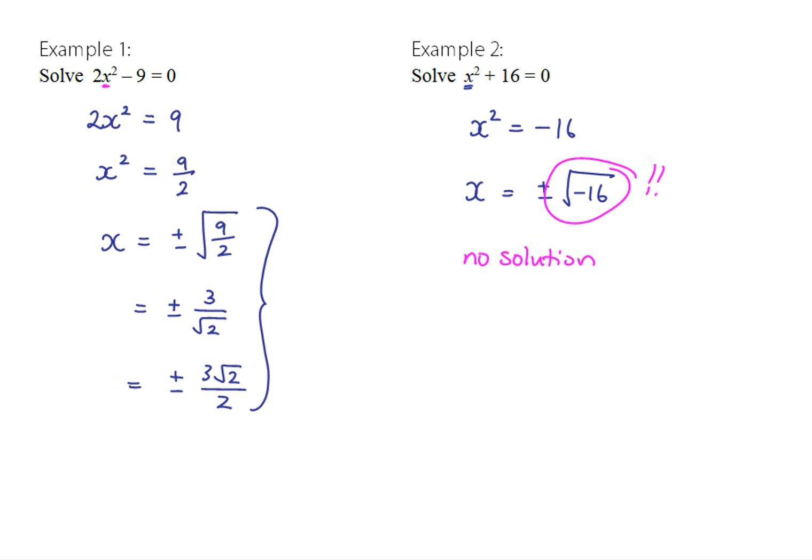So there is no solution to this equation. It's not that you would need to use the quadratic formula — there is genuinely no solution. If you think graphically, the graph of y = x² + 16 is the parabola shifted up 16. Clearly this doesn't ever equal zero, it doesn't have any x-intercepts. So bear in mind that not all quadratic equations will have solutions.